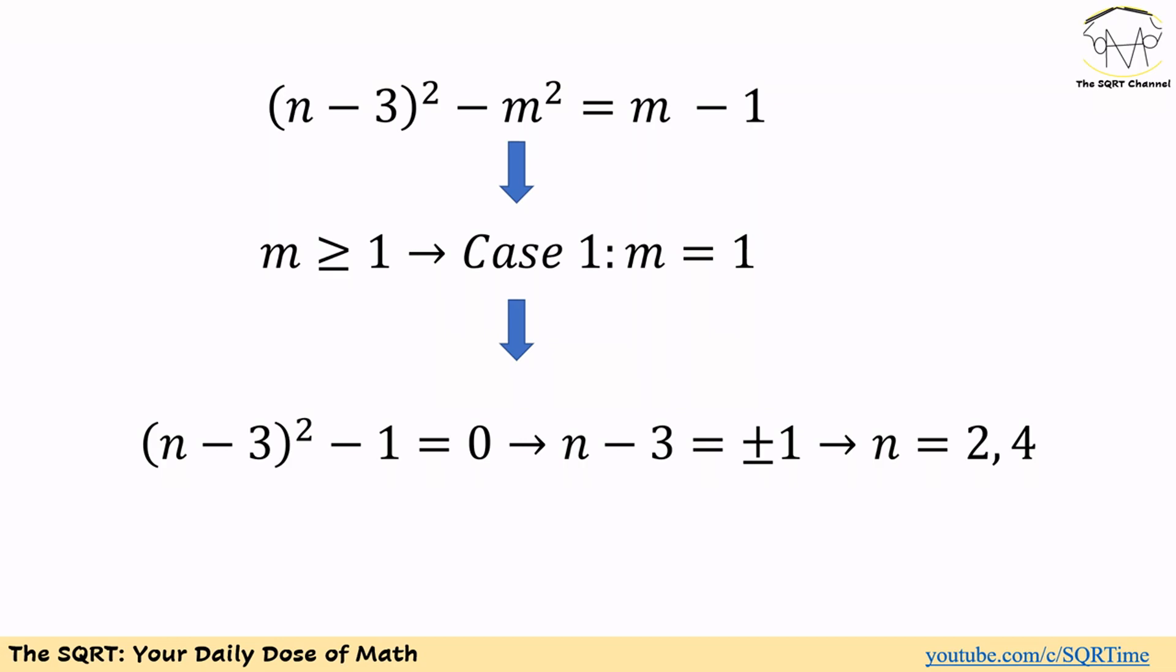Both 2 and 4 are positive integers and you can verify that actually with m is equal to 1, both of them result in the same equation and they satisfy the equation. So n is equal to 2 and 4 for m is equal to 1 are answers.